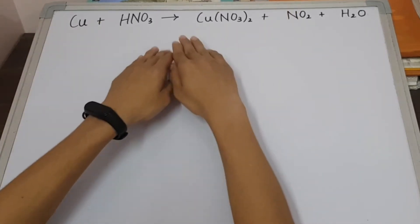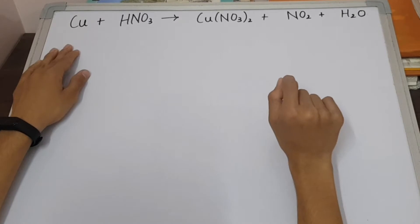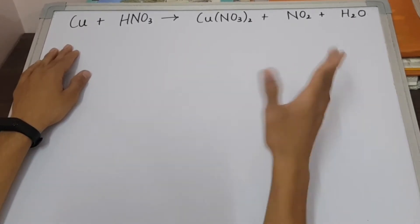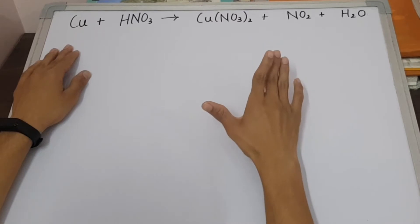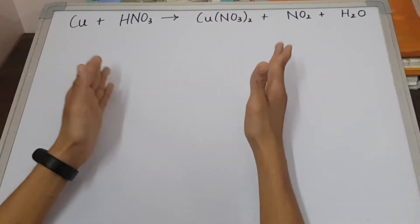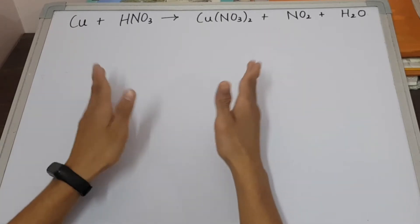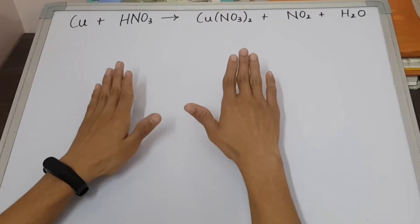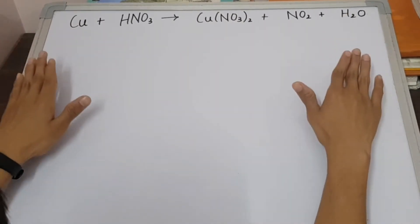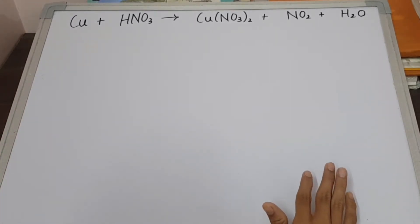In this question we have these equations to balance. You can use the hit and trial method if you want — I have already made a video on that. But in this video I am going to be using a trick which I have already shared in my previous video. First of all, I will suggest that you try to balance it on your own and then watch this video.